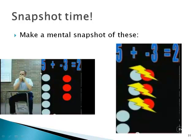They show that when you put together numbers of different signs, they work against each other. You end up with a smaller value.